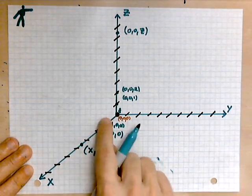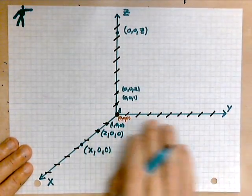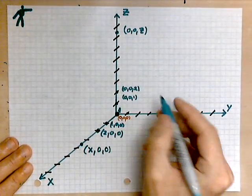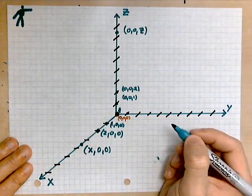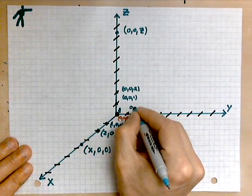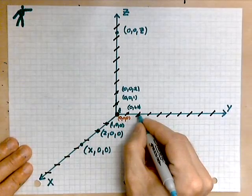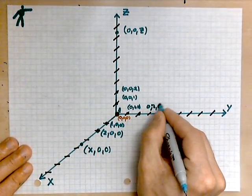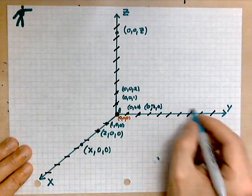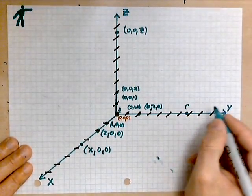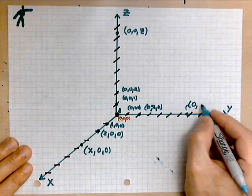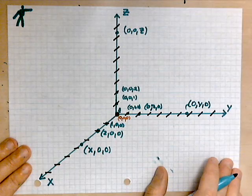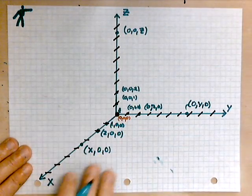And of course along the y-axis the same principle applies. So a random point along the y-axis, let's label a couple. For example, this one here would be labeled as 0, 1, 0. This one would be labeled as 0, 2, 0. And then any other point would be labeled as 0, y, 0, like this. So this is how you label points along the coordinate axes.